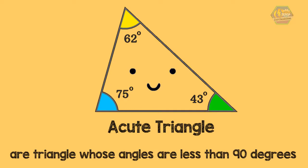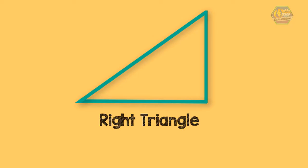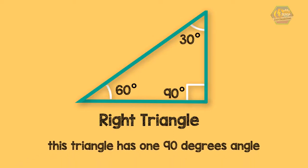The next type of triangle is called the right triangle. We can say that a triangle is a right triangle if it has one right angle, or an angle that is equal to 90 degrees.